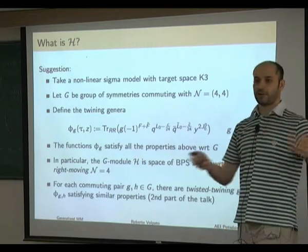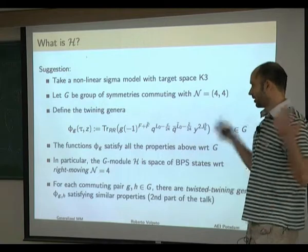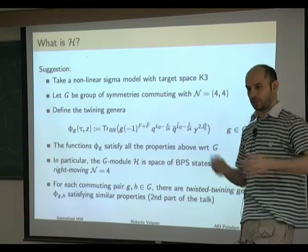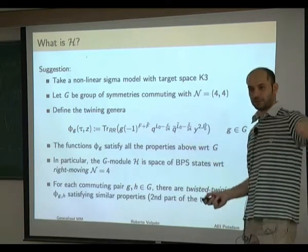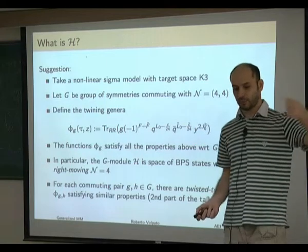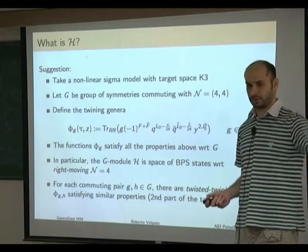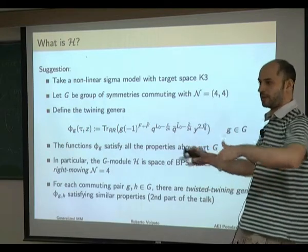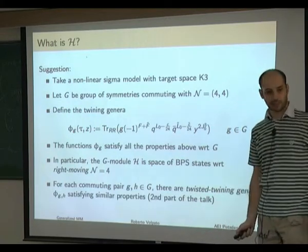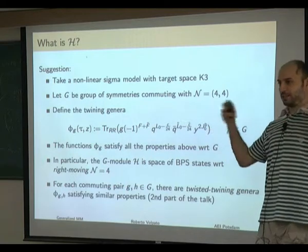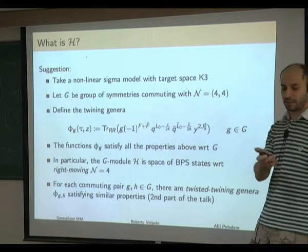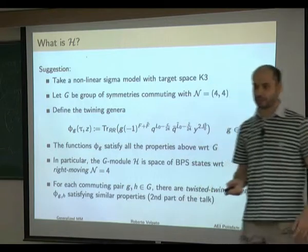However, one can think they are somehow related to Mathieu Moonshine — for instance, one would like to find some chiral de Rham complex based on K3 obtained by manipulating these nonlinear sigma models, or look at more general superstring theories, such as type II superstrings compactified on K3 times something else, where these sigma models appear. It is interesting to try to understand if there is a relation between the symmetries of these nonlinear sigma models and the group M24.